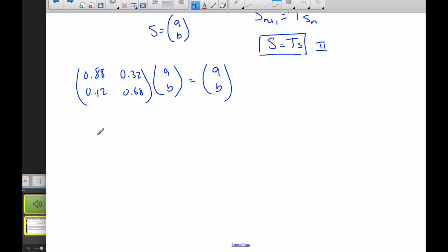And so now when I actually do the multiplication, I get 0.88A plus 0.32B is equal to A. And if I simplify that, bring my A over, I get negative 0.12A plus 0.32B is equal to 0.